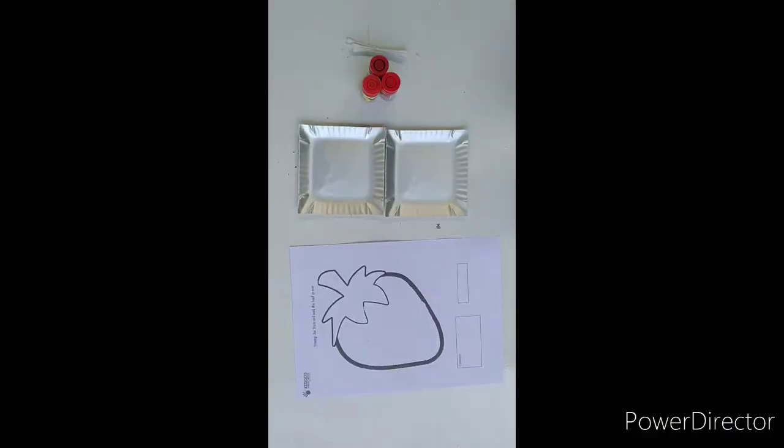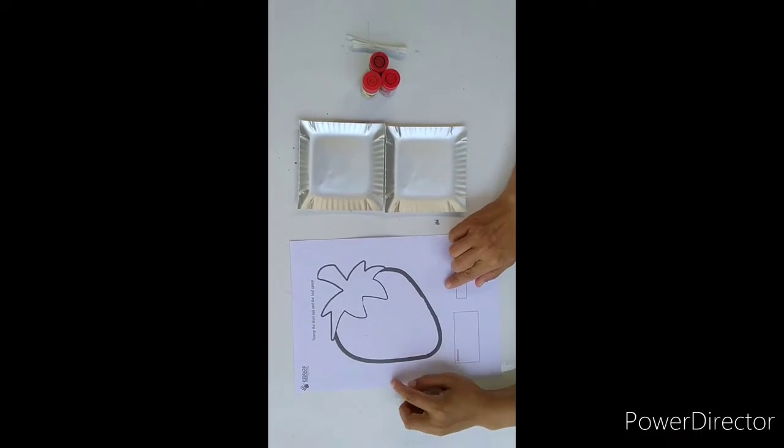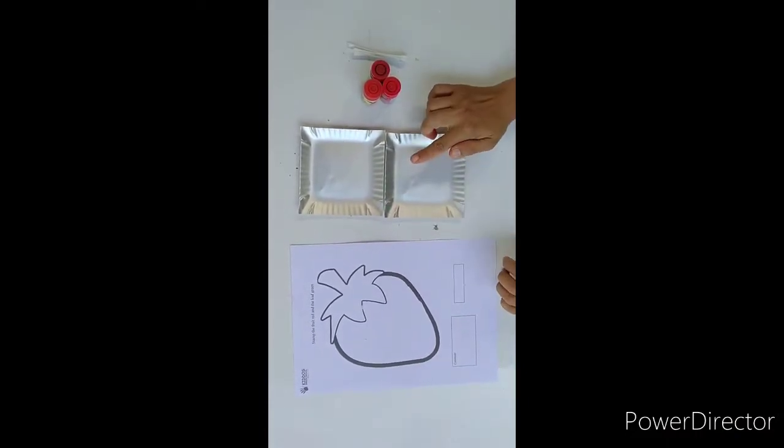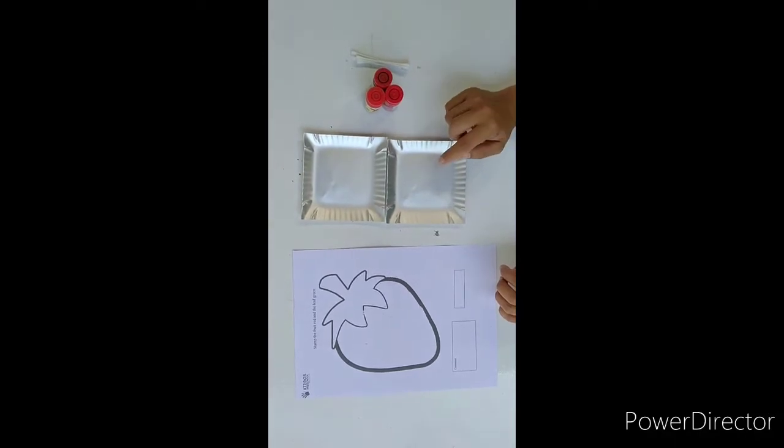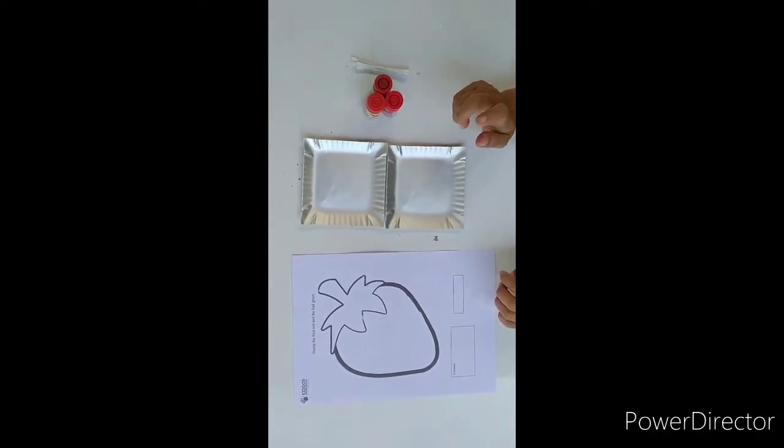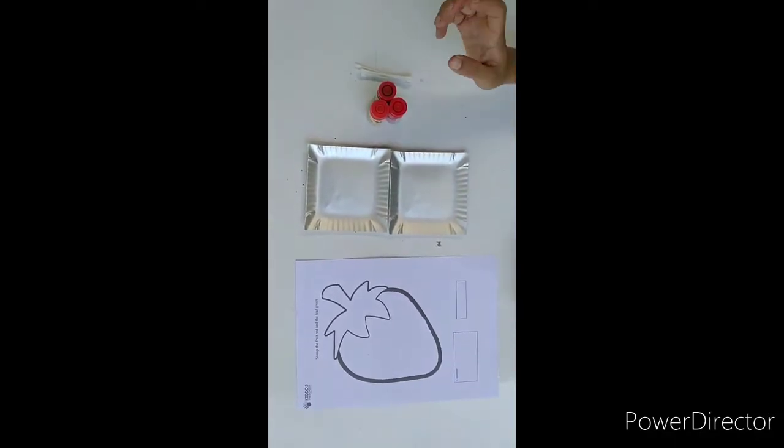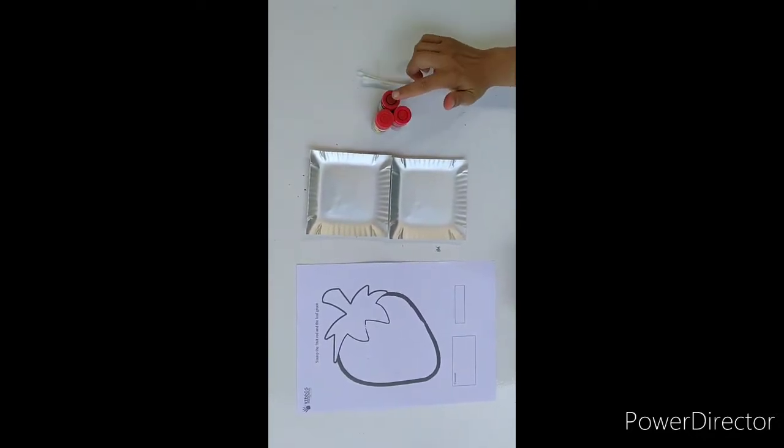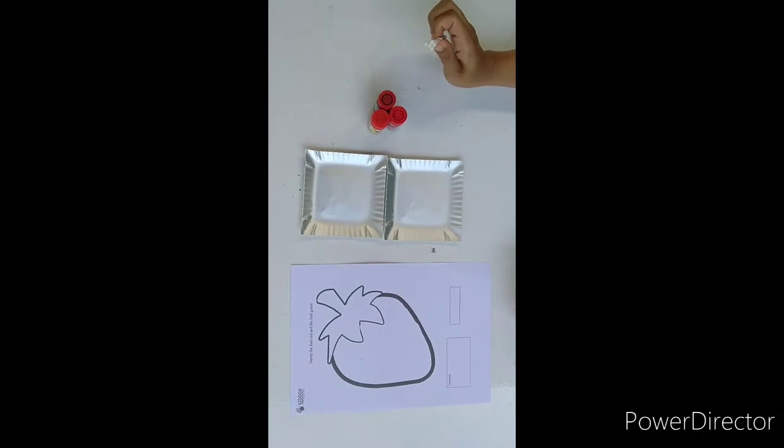So, what do we need to make it? Let's take it one by one. The first one, we need the picture of strawberry, and then two plates, or two bowls, or two glasses. It's up to you. And then, three colors: yellow, red, and also blue. And the last one is cotton bud.